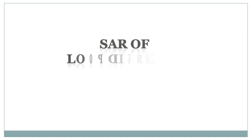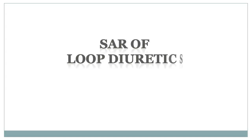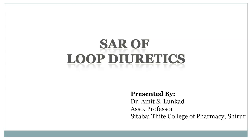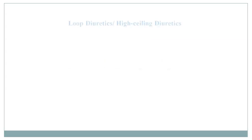Hi, I am Amit Lunkard. In this video we discuss about the structural activity relationship of loop diuretics. Loop diuretics are also known as high ceiling diuretics. These act on the thick ascending limb of the loop of Henle, and therefore it is also known as site 2 diuretics.